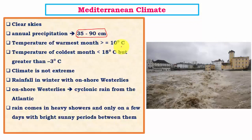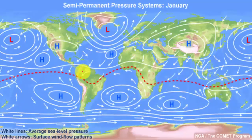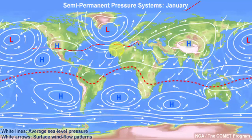In the warmest month, the temperature is always above 10 degrees Celsius, whereas in the coldest month it is always below 18 degrees Celsius and never below minus 3 degrees Celsius. Summers are very warm while winters are mildly to sometimes severely cold. The climate is not extreme because of maritime influence — these regions are close to oceans and are affected by land and sea breezes. Rainfall in winter arrives via onshore westerlies (also called prevailing westerlies) blowing from seas to continents.